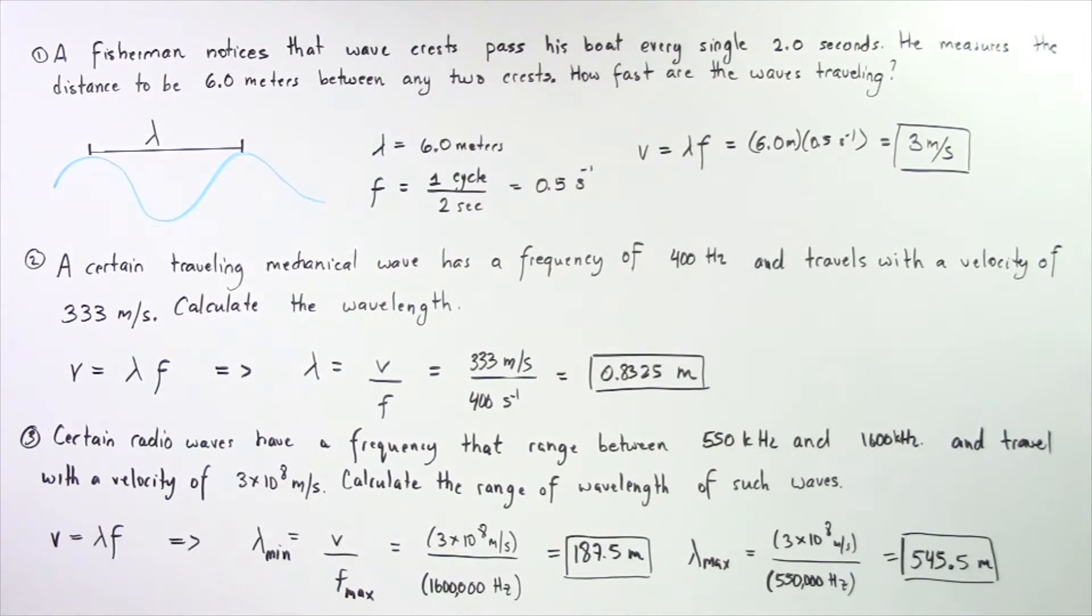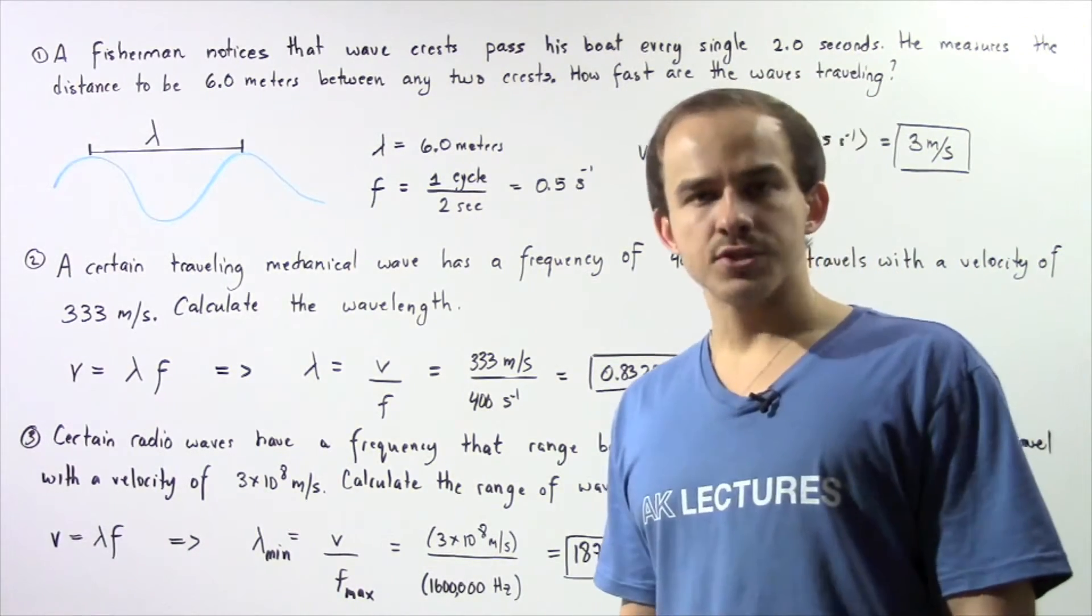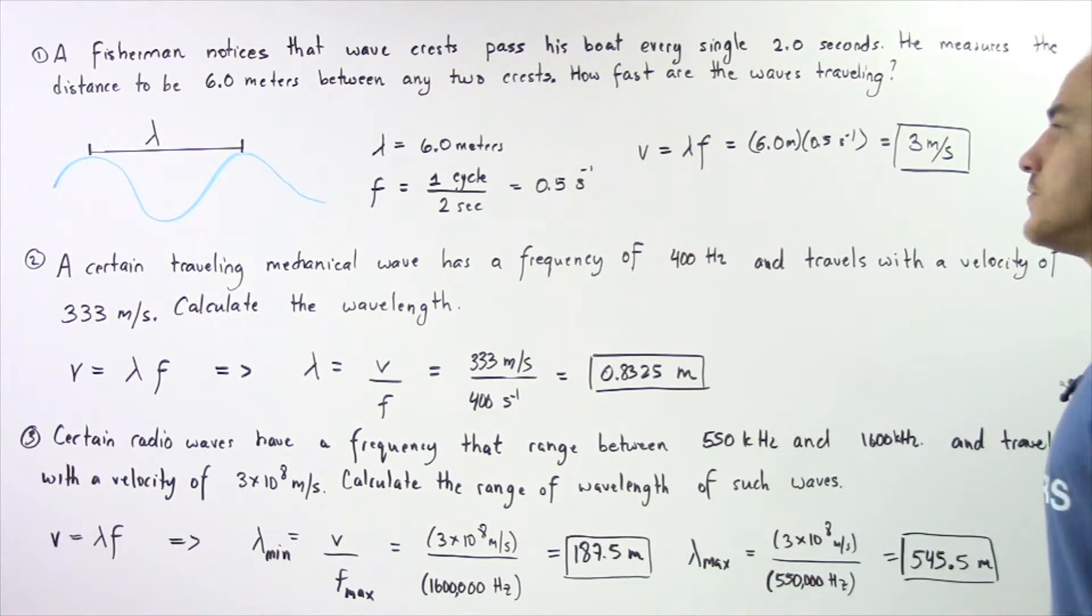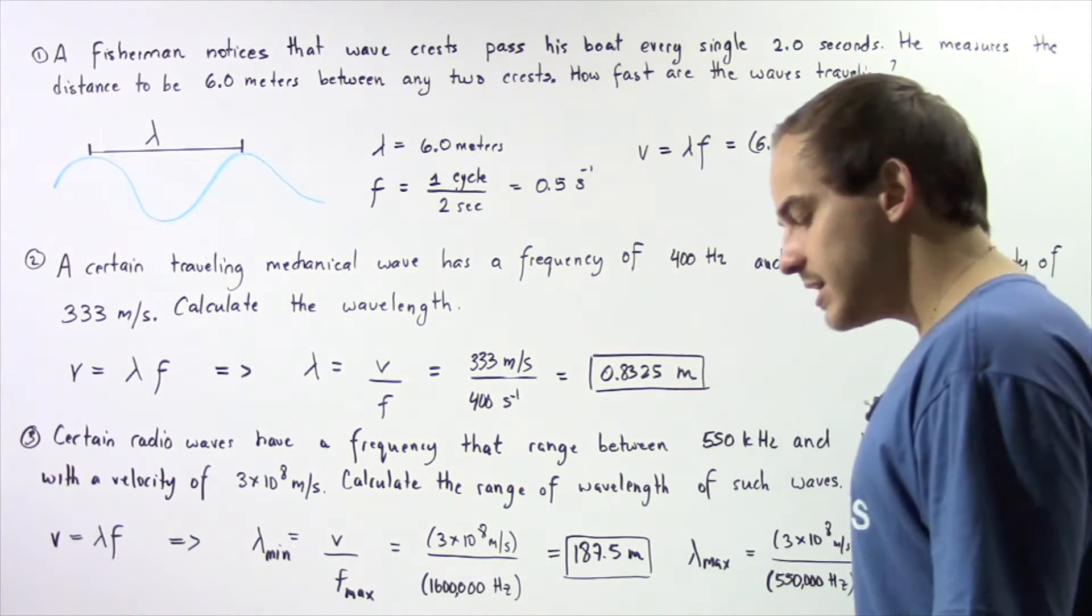He measures the distance to be six meters between any two consecutive crests. Using that information, we want to calculate how fast the waves are propagating. We want to calculate the velocity of the wave.